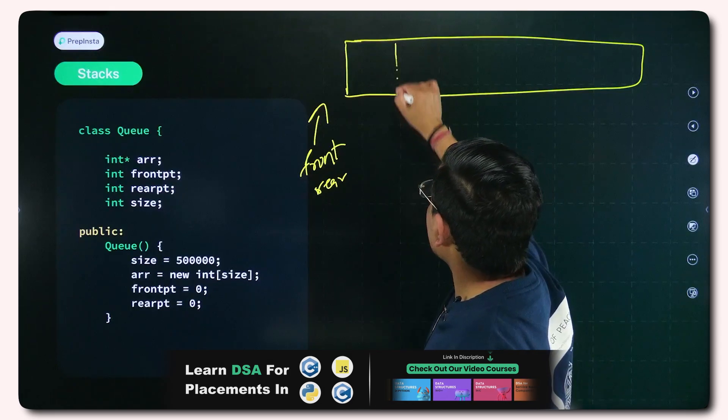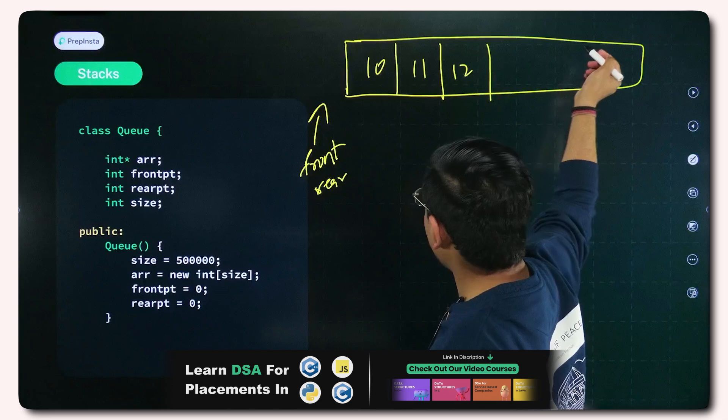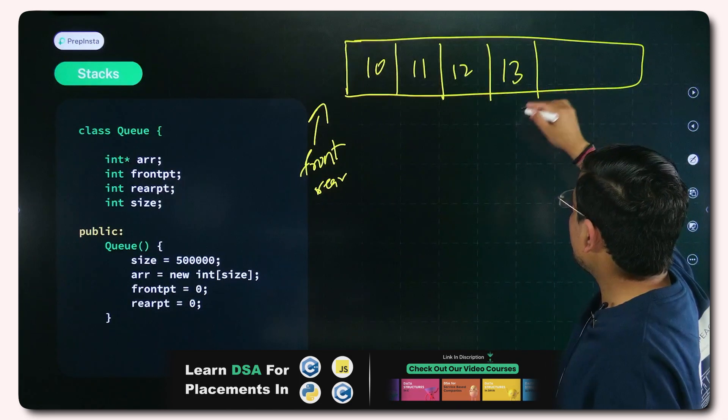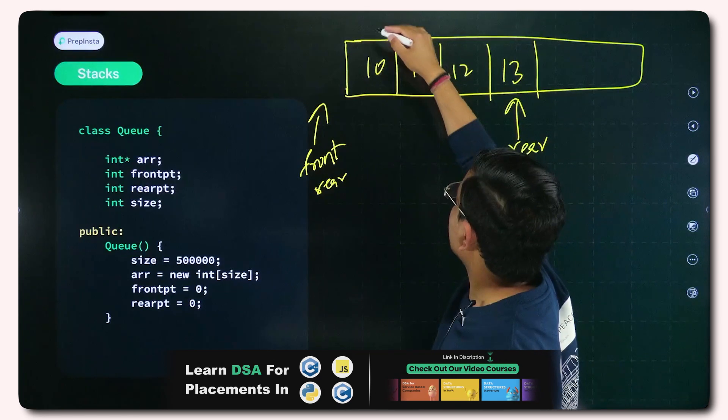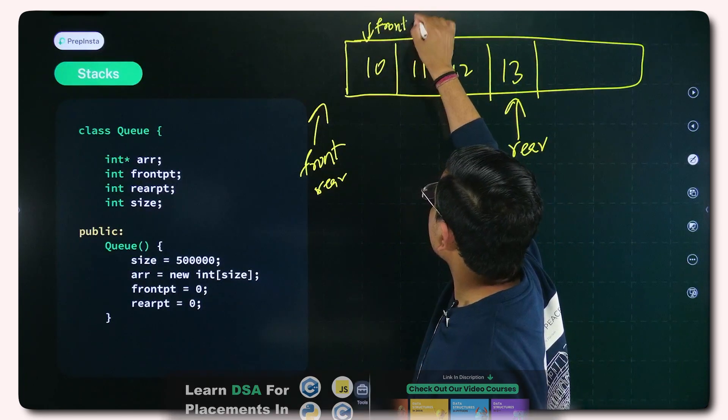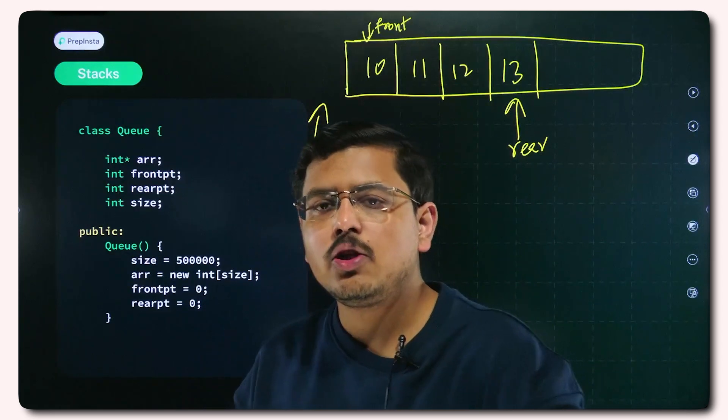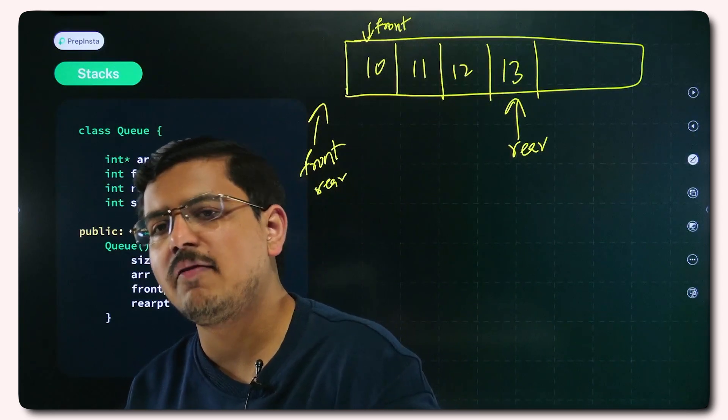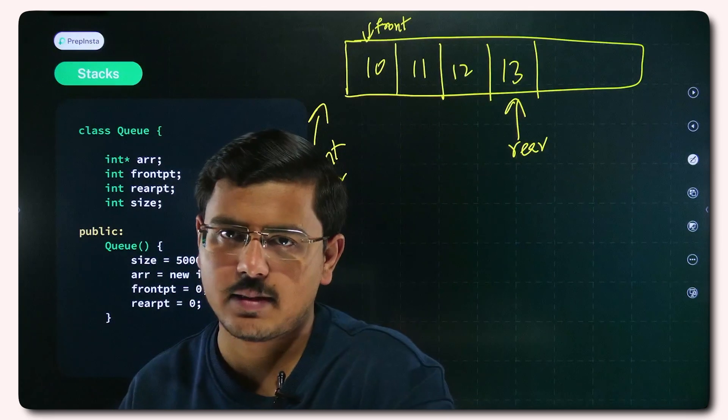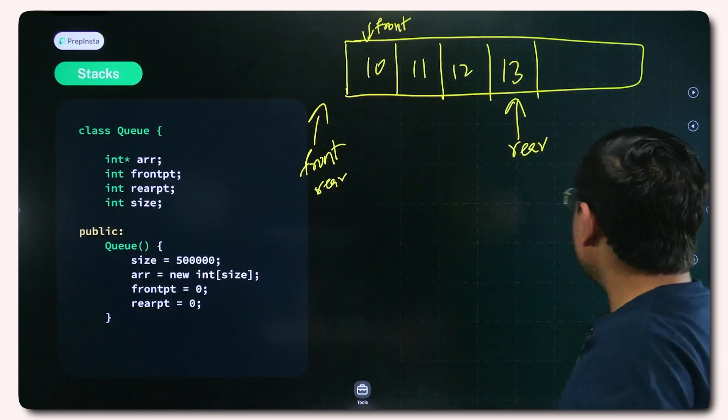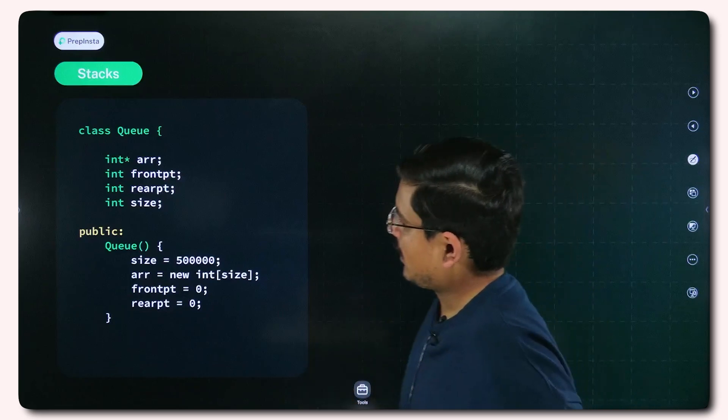If there are elements 10, 11, 12 here and I add one more element, from rear it would enter 13 and rear would point out here finally and then front would point out somewhere here. By principle in queues it is followed that whenever front and rear are equal, we consider that the queue is empty. Let's understand the code implementation.